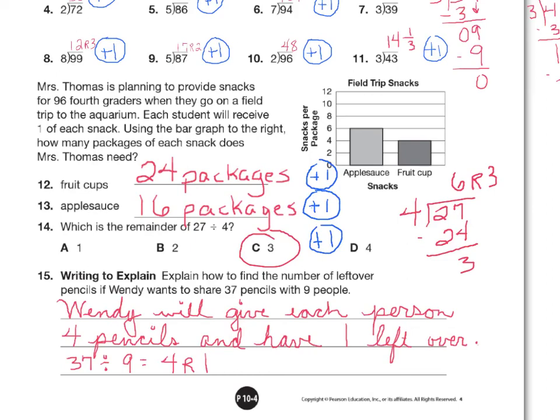You need to have said there's 1 left over. If you did say there was 1 left over, because that's what we were looking for, that was the question right here: find the number left over, or explain how to find the number left over. And then I have 37, the number sentence, divided by 9 equals 4 remainder 1. You get a plus one if you were able to explain that.